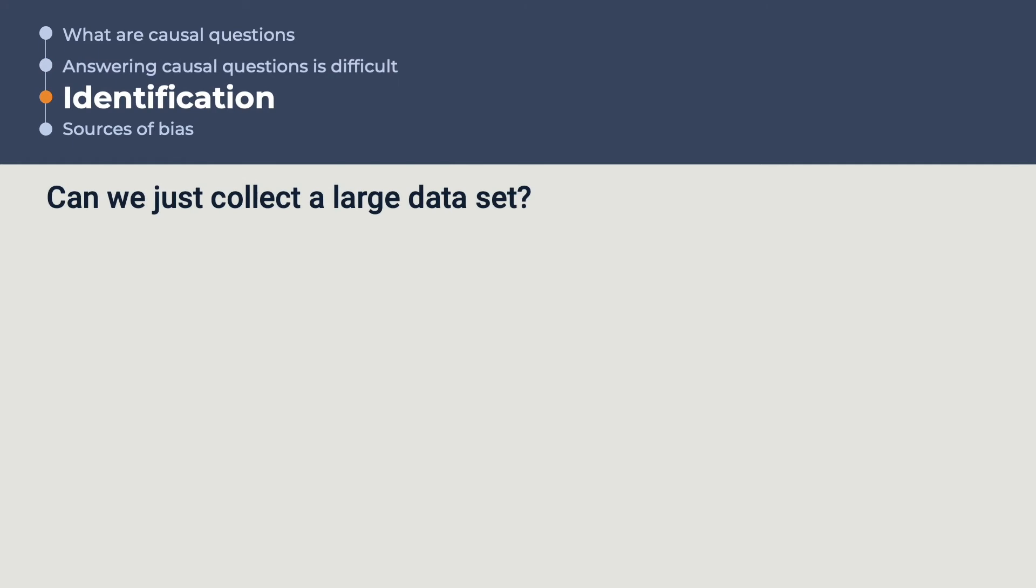You might wonder if, when answering causal questions, we can't just get lots of data, some from treated people, and some from people who were not treated, and then compare the outcomes in both groups. In practice, we will end up doing just that. However, this will present a second problem known as bias.